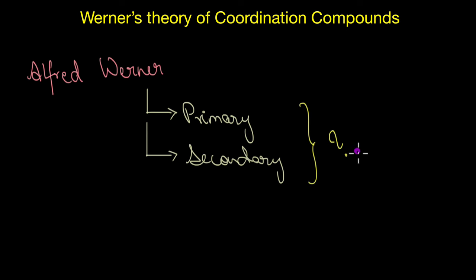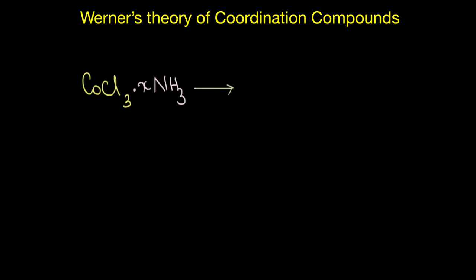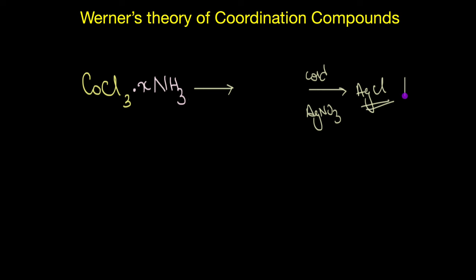To arrive at this, he took a series of compounds of cobalt chloride with ammonia and reacted them with cold silver nitrate solution. He observed that in some cases AgCl was precipitated, but in other cases it was not. AgCl can be precipitated only if a free chloride ion is present — that is, if the chloride ion is actually ionizable — so that it can react with silver nitrate solution and precipitate as silver chloride.